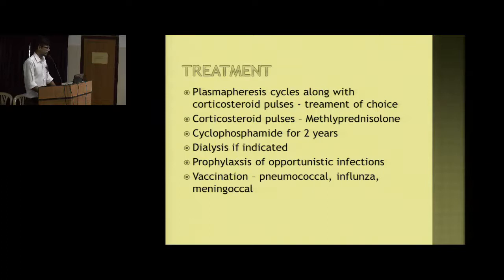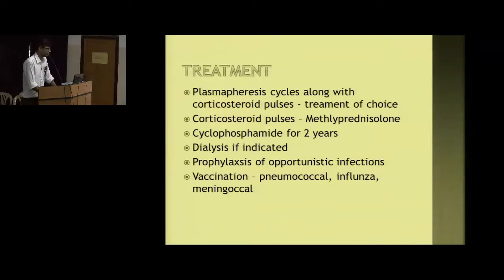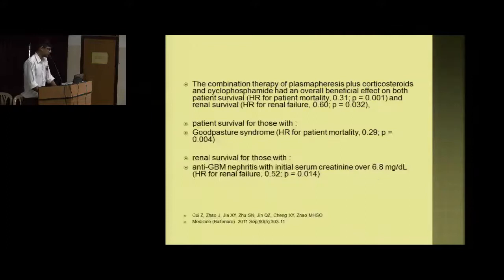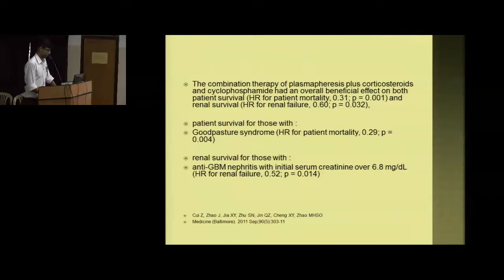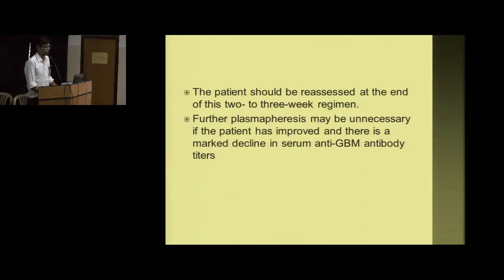Treatment of choice is mainly plasma exchange along with corticosteroid pulses. The most common drug used for pulsing is methylprednisolone, followed by cyclophosphamide for long-term immunosuppression, though mycophenolate can also be used. Patients should receive trimethoprim-sulfamethoxazole prophylaxis and vaccinations against pneumococcal, influenza, and meningococcal disease. Evidence shows combined plasma exchange and corticosteroid therapy gives much better patient and renal survival than corticosteroids alone. Patients should be reassessed at the end of a 2-3 week regimen.